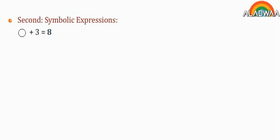Second, Symbolic Expressions. Examples using shapes: a circle plus 3 equals 8; 4 times a square equals 12; a triangle minus 3 equals 11.